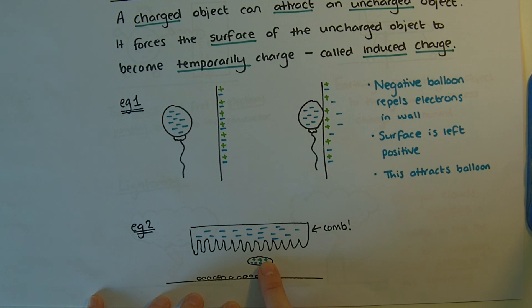It's pushed the negatives down to the bottom, leaving positives up at the top which attract to the comb.